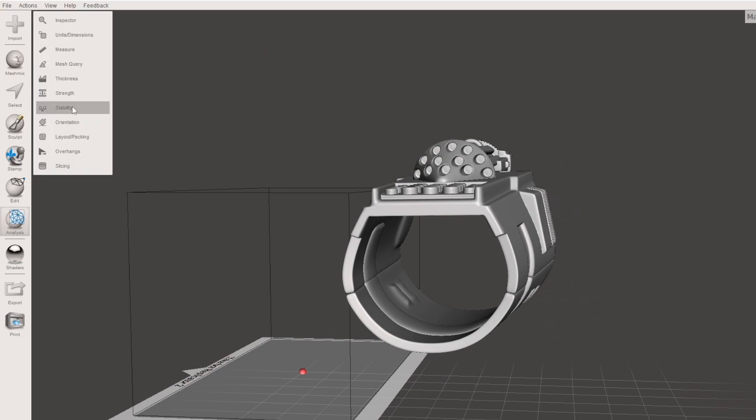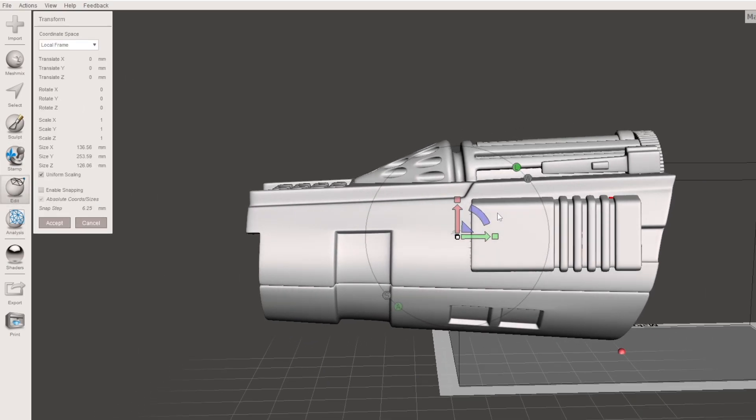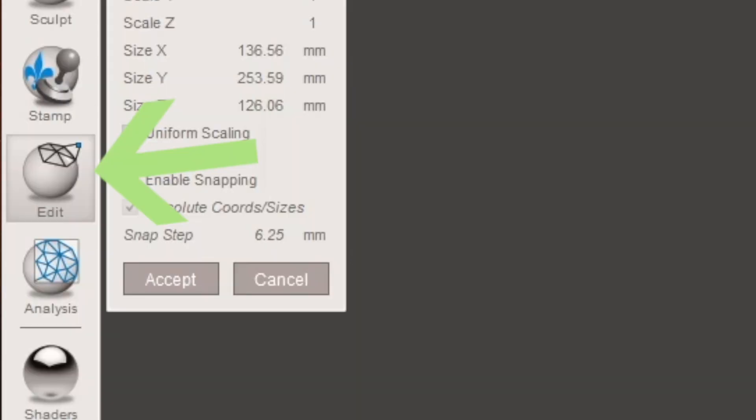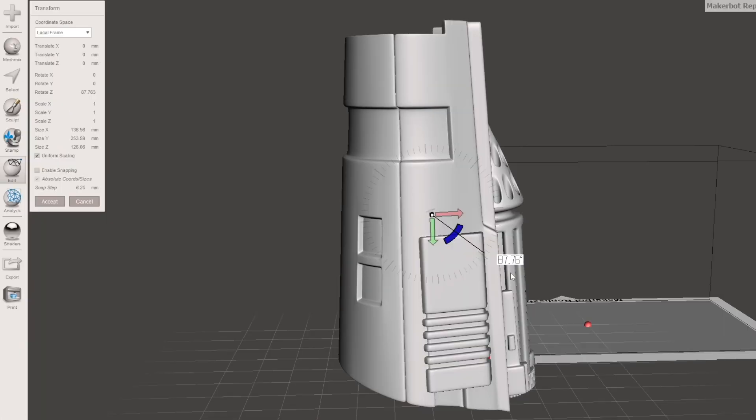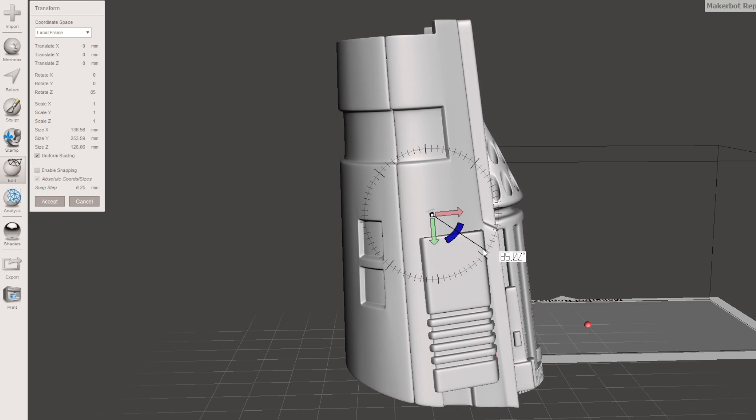With these measurements in hand I then open up Meshmixer and load in my gauntlet file. For this tutorial I'll only be showing you the left gauntlet but I do the same set of steps for the right as well. I'm able to move the gauntlet around by clicking this edit button over on the left and selecting transform. From here I can rotate the model any which way I would like to.